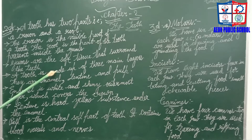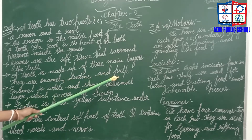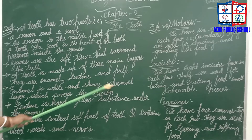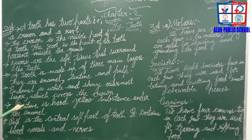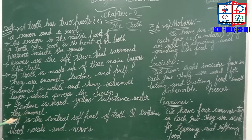A tooth is made up of three main layers. They are enamel, dentine, and pulp. Enamel is the white and shiny outermost layer which covers the crown. Dentine is a hard yellow substance found under the enamel.